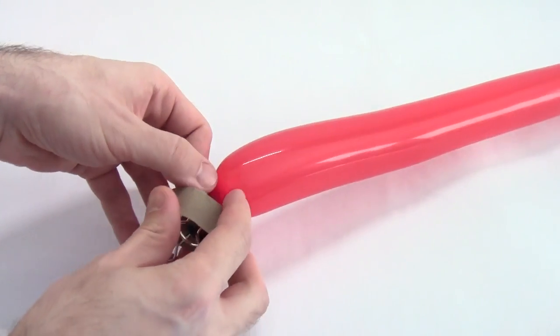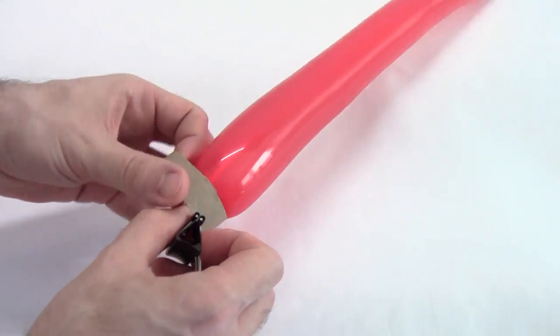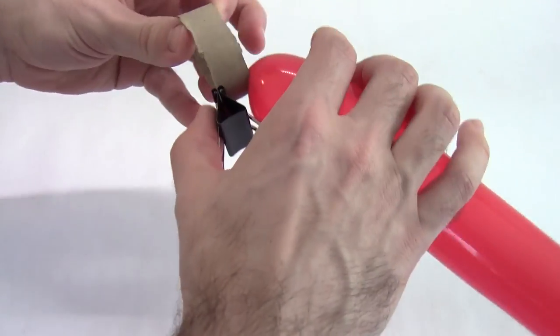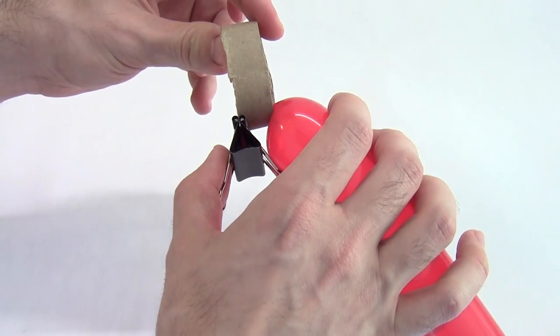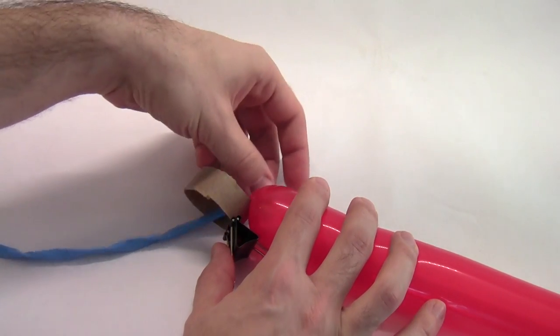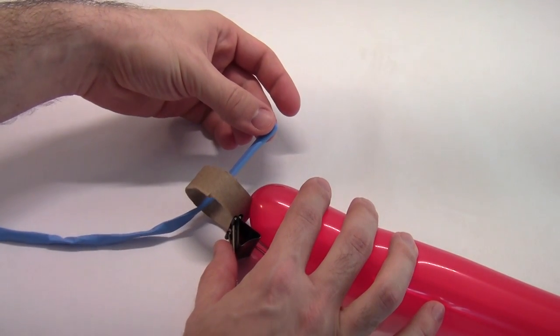Now, pull the nozzle of this balloon through the cardboard ring and press the nozzle up against the side like this. Thread a second balloon partially through the cardboard ring a little less than halfway.